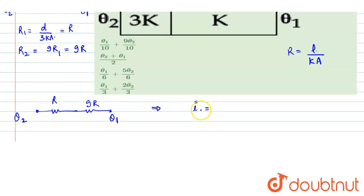Thermal current or the rate of heat flow would be temperature difference upon thermal resistance. That would be theta2 minus theta1 upon 10R.